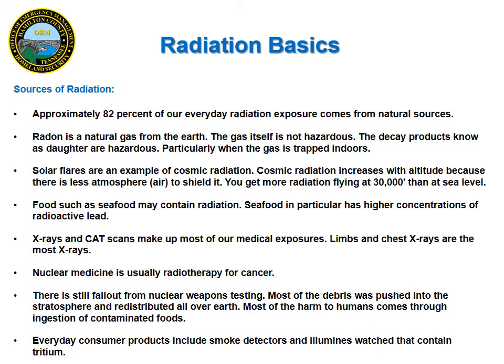We can receive internal contamination through food that we eat, such as seafood. Medical exposure comes from things like x-rays and CAT scans. If you are being treated for cancer, you will receive some kind of nuclear medicine such as radiotherapy. Industrial and occupational exposures come from everyday items such as smoke detectors. It is also interesting to note that 0.1 percent includes radiation produced by nuclear plants.